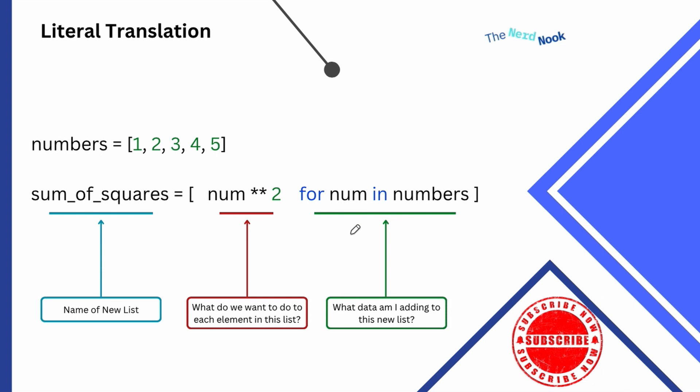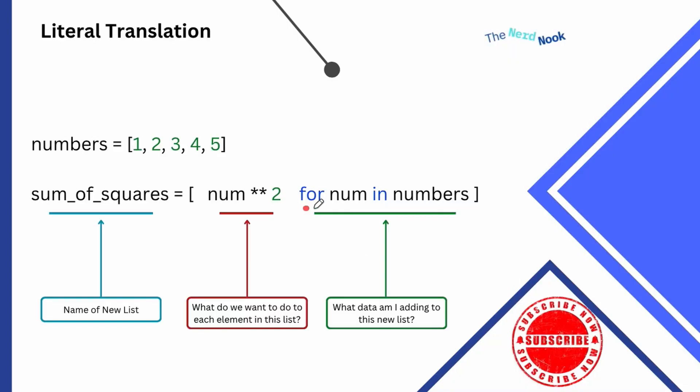I want to square the number — just square it. And then it's followed by what data am I adding to this list. So I need to give my comprehension an iterable — a type of data we can iterate through: list, tuple, string. For every num in my list of numbers, I would like to do something with that num. That's a basic form of our comprehension.